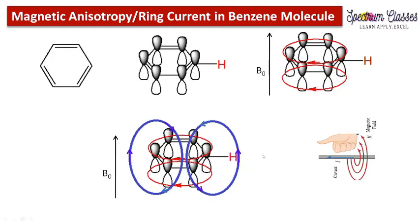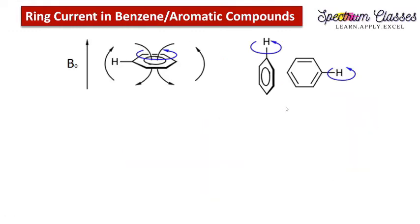This region is known as the deshielding zone. If a proton is geometrically positioned in this deshielding zone due to the ring current, then it will be highly deshielded.